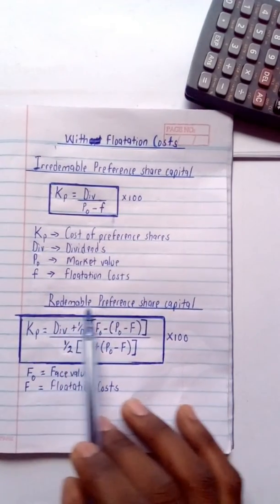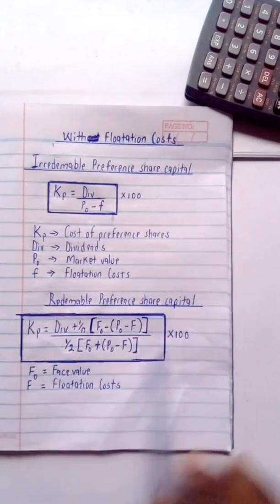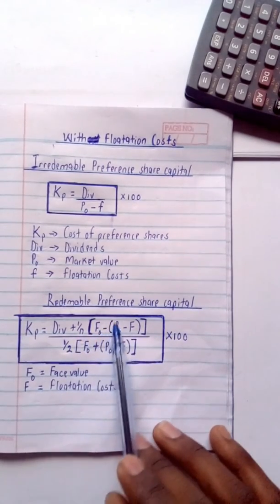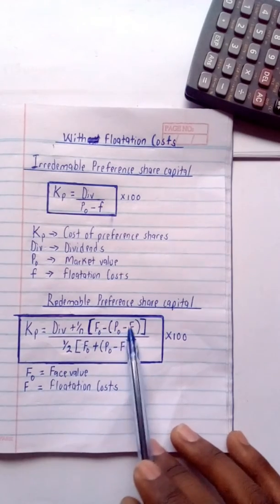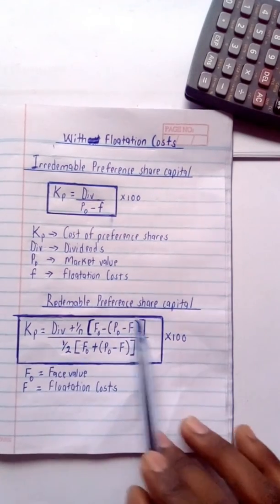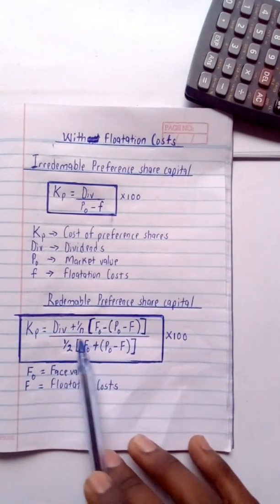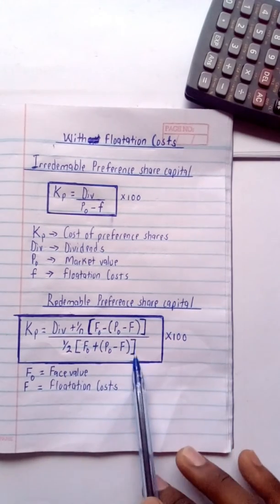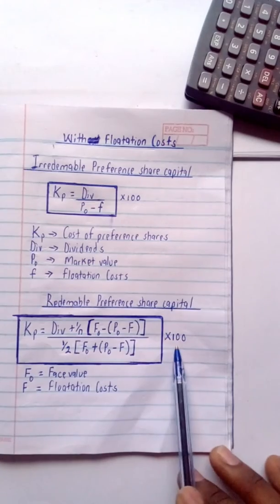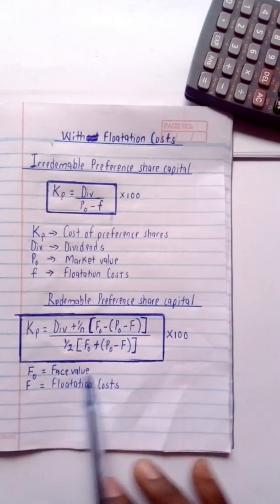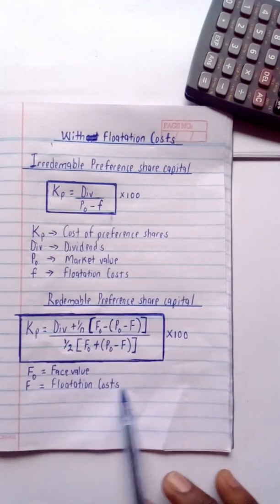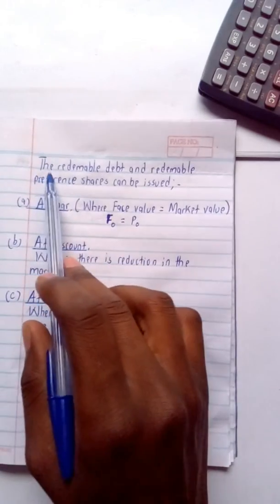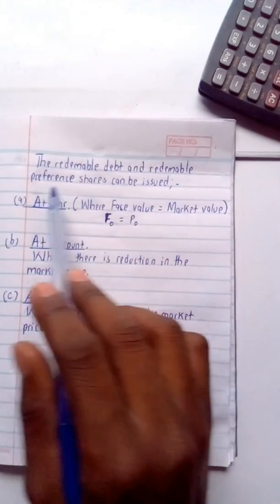For redeemable preference share capital with flotation costs, we use: Kp = { [Div + (1/n)(F₀ − (P₀ − F))] / [½(F₀ + (P₀ − F))] } × 100, where F₀ is the face value and F is the flotation costs.